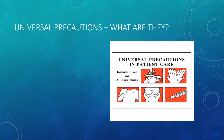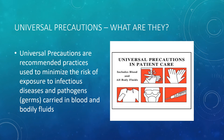Universal Precautions — what are they? Universal precautions are recommended practices used to minimize the risk of exposure to infectious diseases and pathogens carried in blood and bodily fluids.